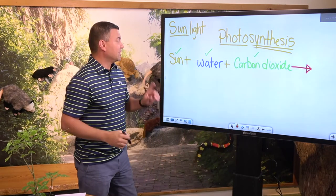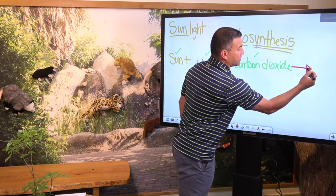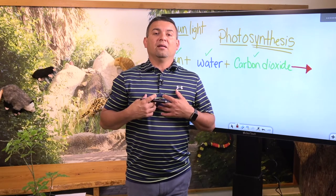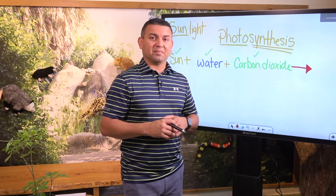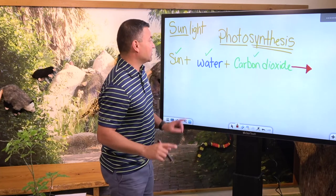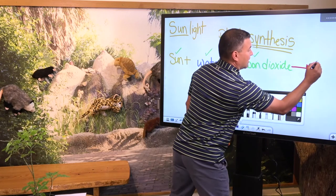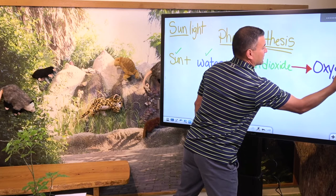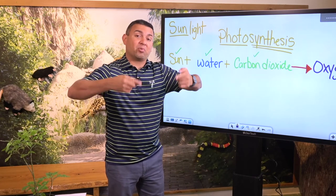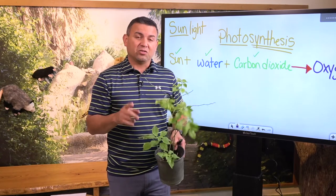This is a formula: sunlight plus water and nutrients plus carbon dioxide yields two things. Do me another favor — take a deep breath in. The air you just breathed in was oxygen, and when you breathe out you're releasing carbon dioxide. We've discussed carbon dioxide, but what are we breathing in? Oxygen. Plants synthesize these ingredients and create a byproduct known as oxygen, which they release into the atmosphere.